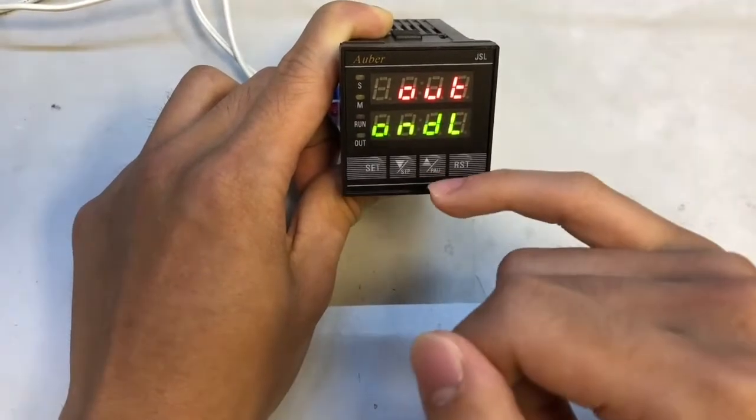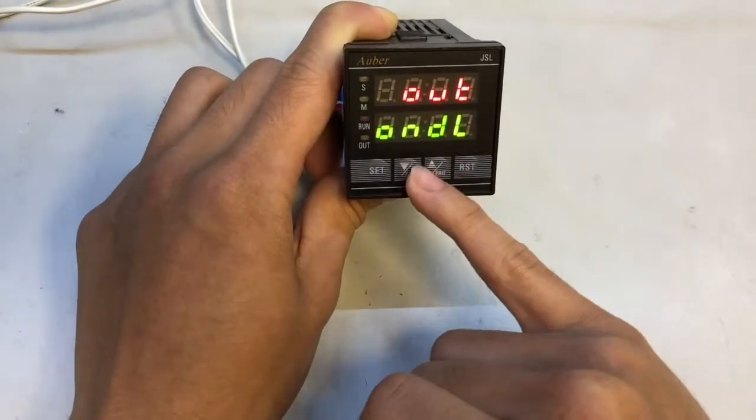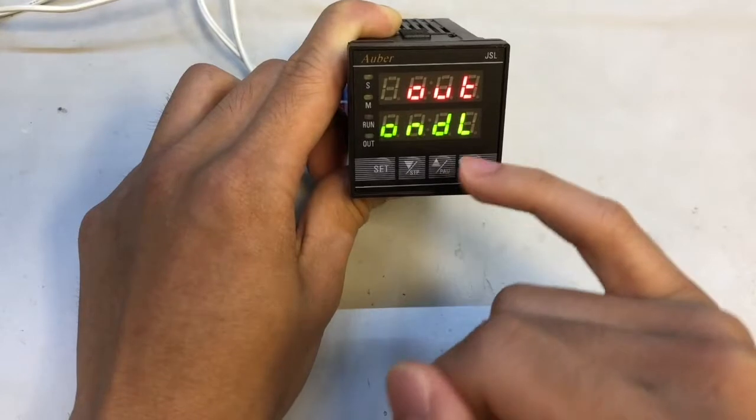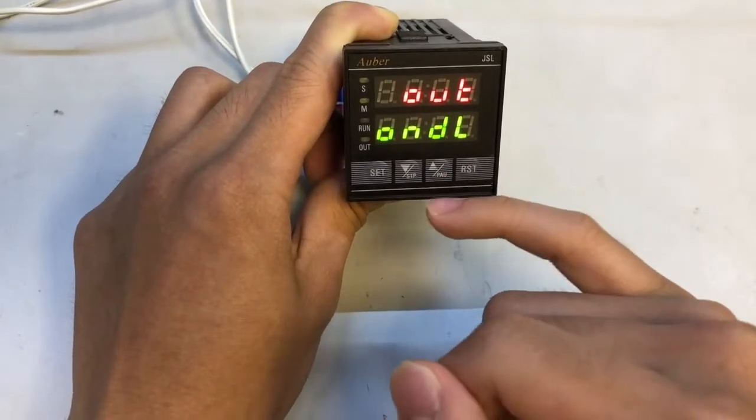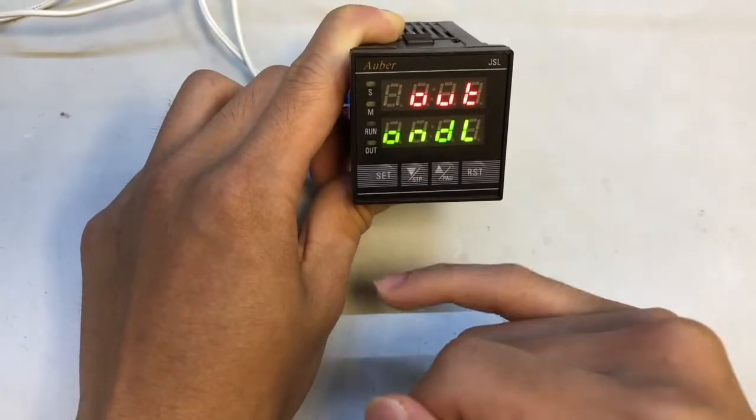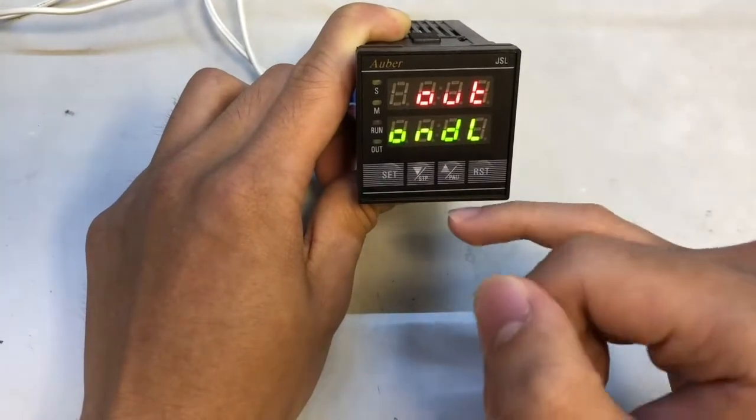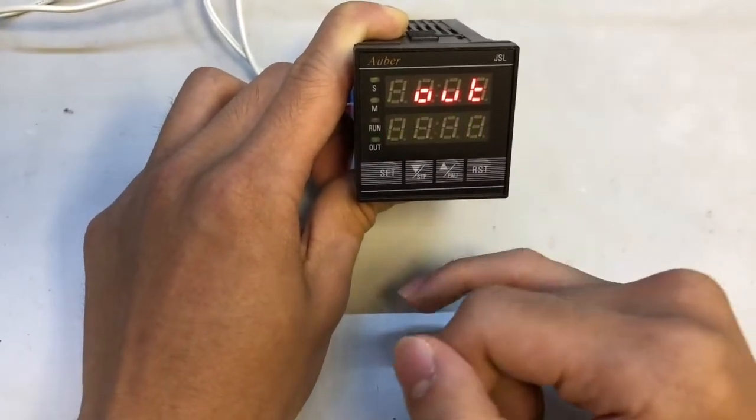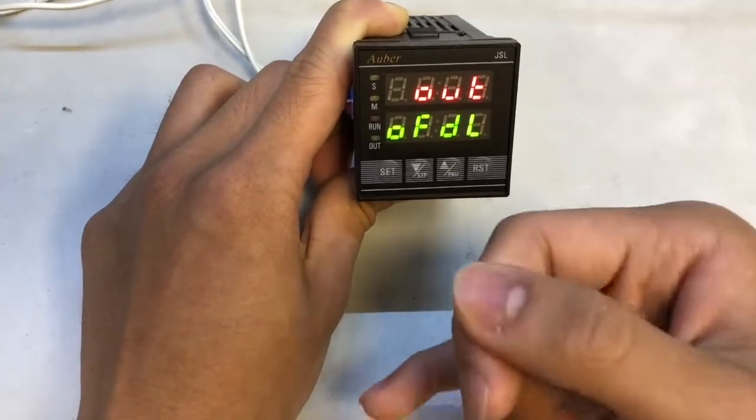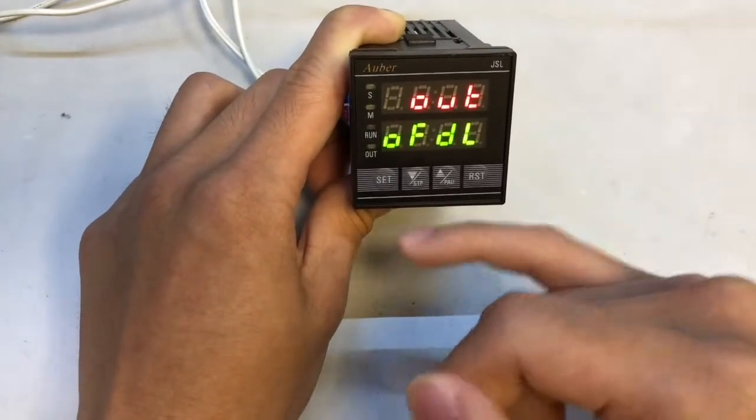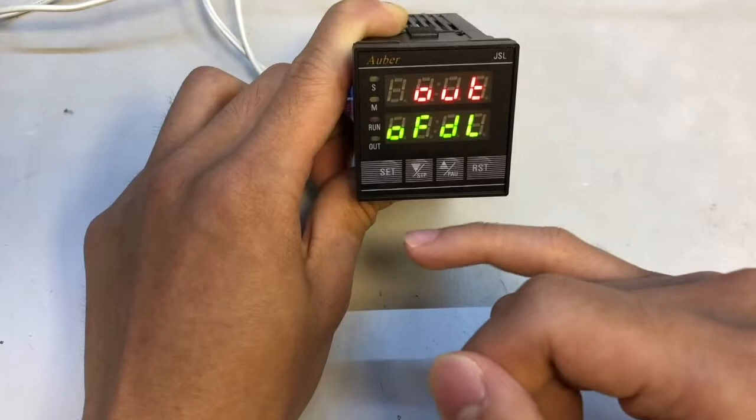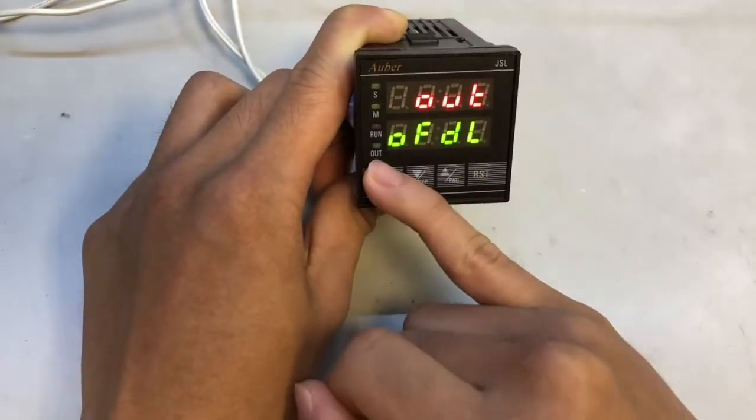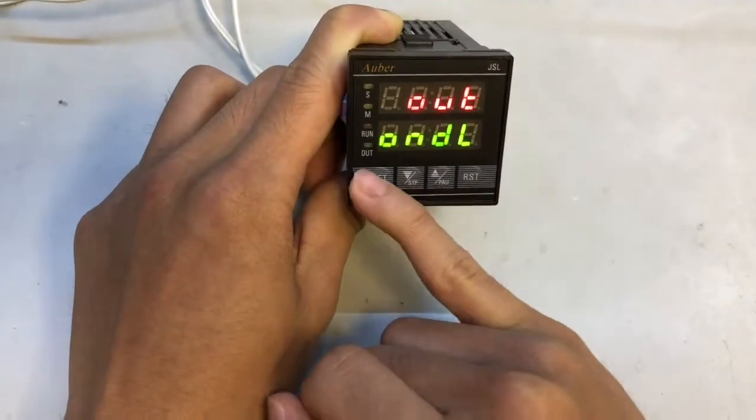This is our output mode. There's two different settings: ONDL or on delay, where the relay will stay off at the start of the timer and switch on once the timer reaches the set time. And you have your OFDL or off delay, which is the complete opposite - the relay will be on and then switch off once the timer reaches the set time. We're just going to keep it ONDL or on delay.